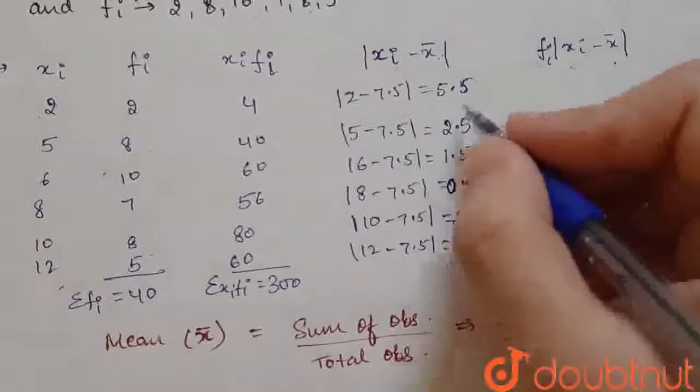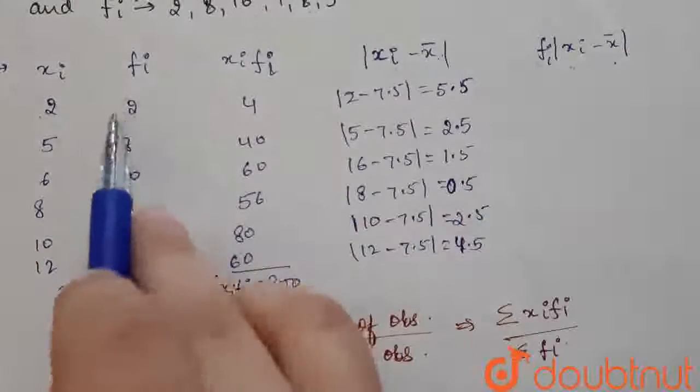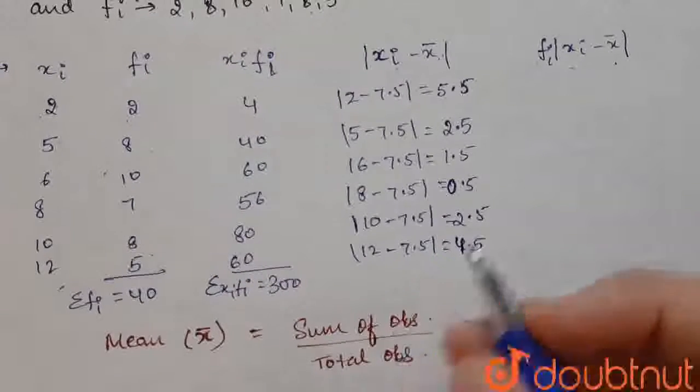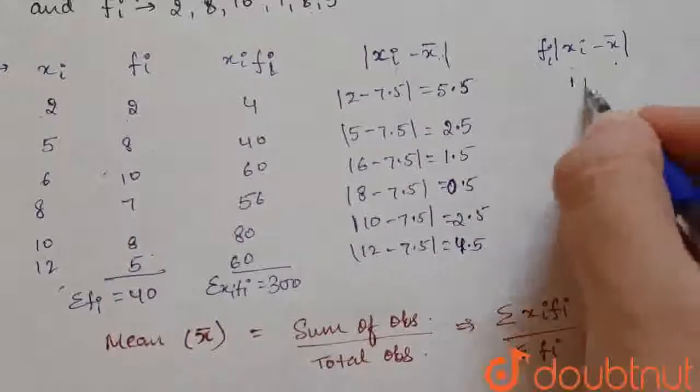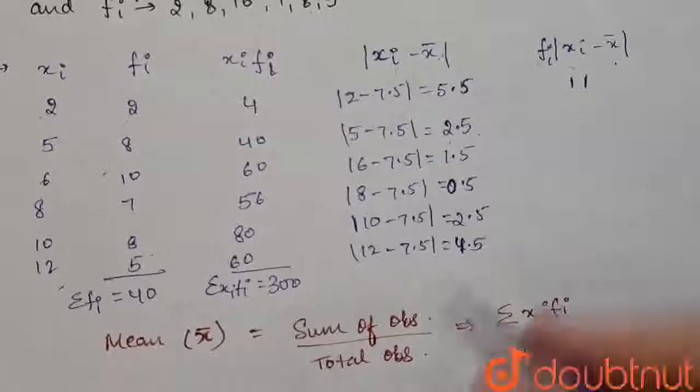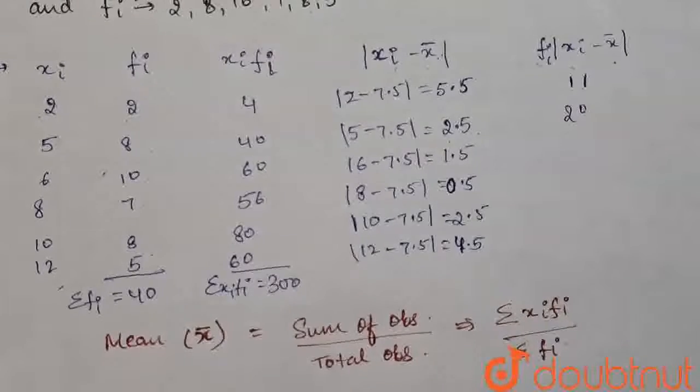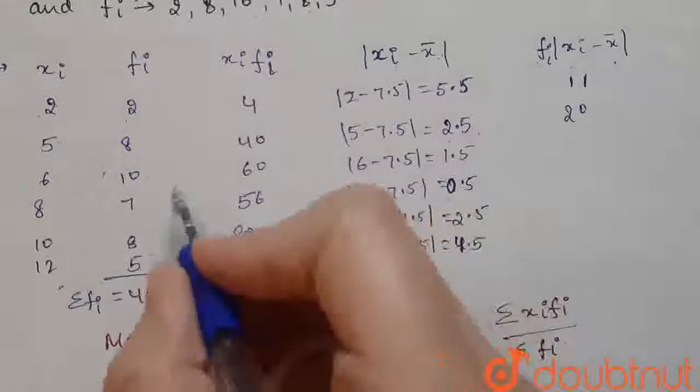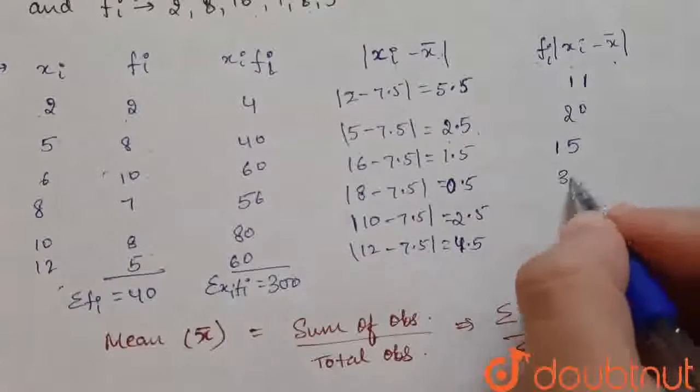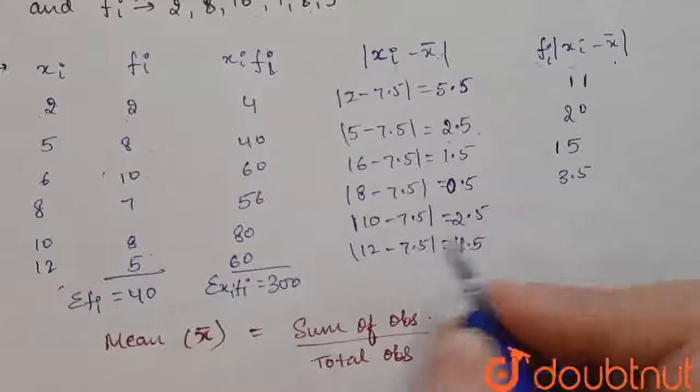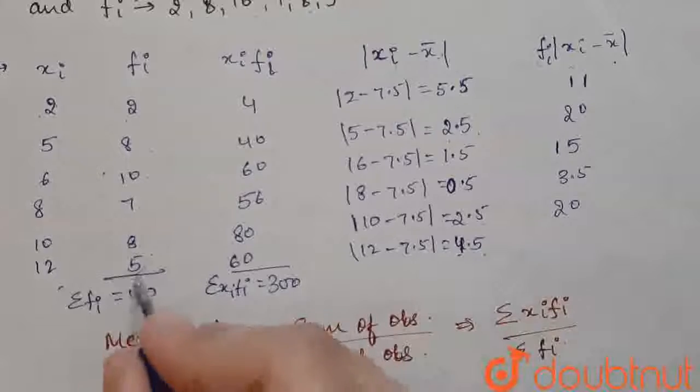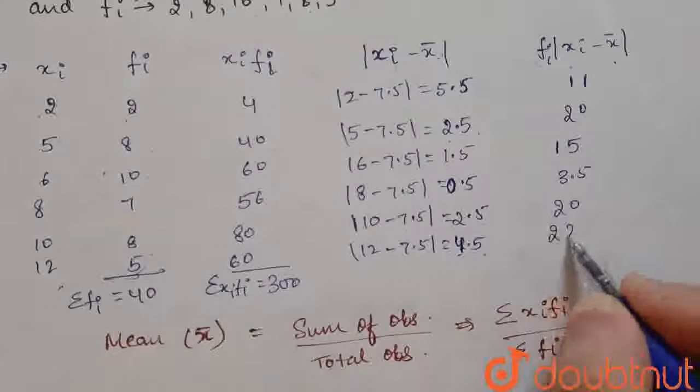So, fi into 5.5. Fi for this is 2, so 2 multiplied by 5.5 will give us 11. 2.5 into 8 will give us 20. 1.5 into 10 will give us 15. 0.5 into 7 will give us 3.5. 2.5 into 8 will give us 20. 4.5 into 5 will give us 22.5.